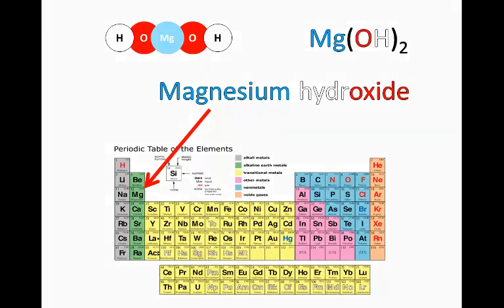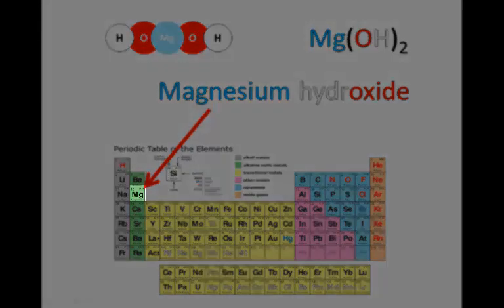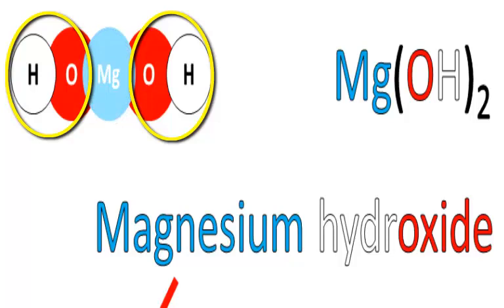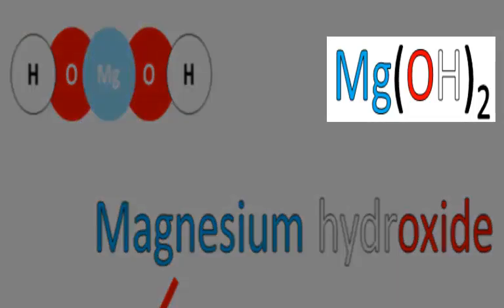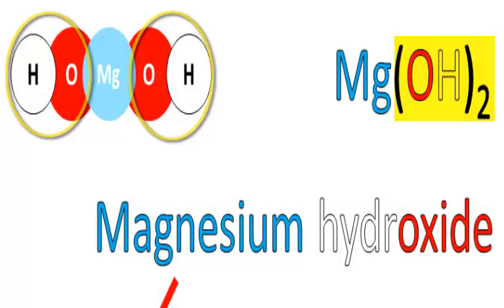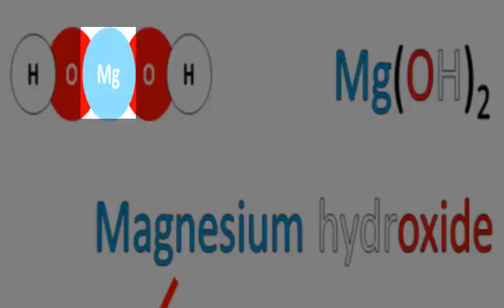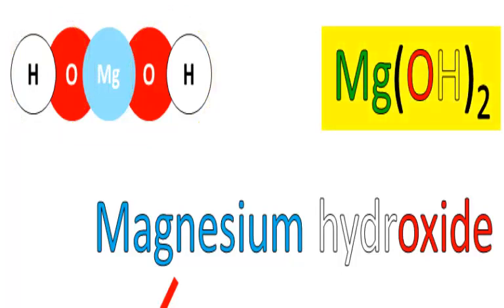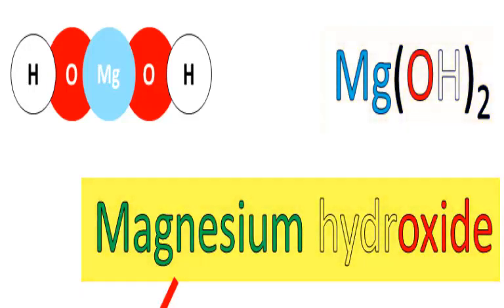Magnesium hydroxide — magnesium is also a metal. You find it here on the left; it's an alkaline earth metal in the second group. Magnesium is bonded to the hydroxide group — one magnesium for every two hydroxide groups. Mg(OH)₂: that bracket around OH and the little two means there are two OHs for every Mg.